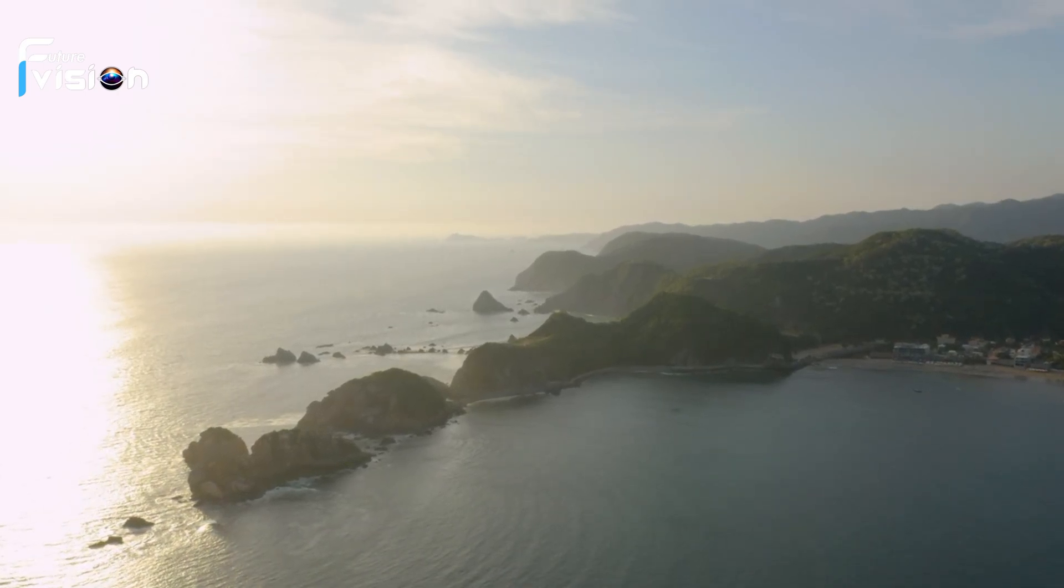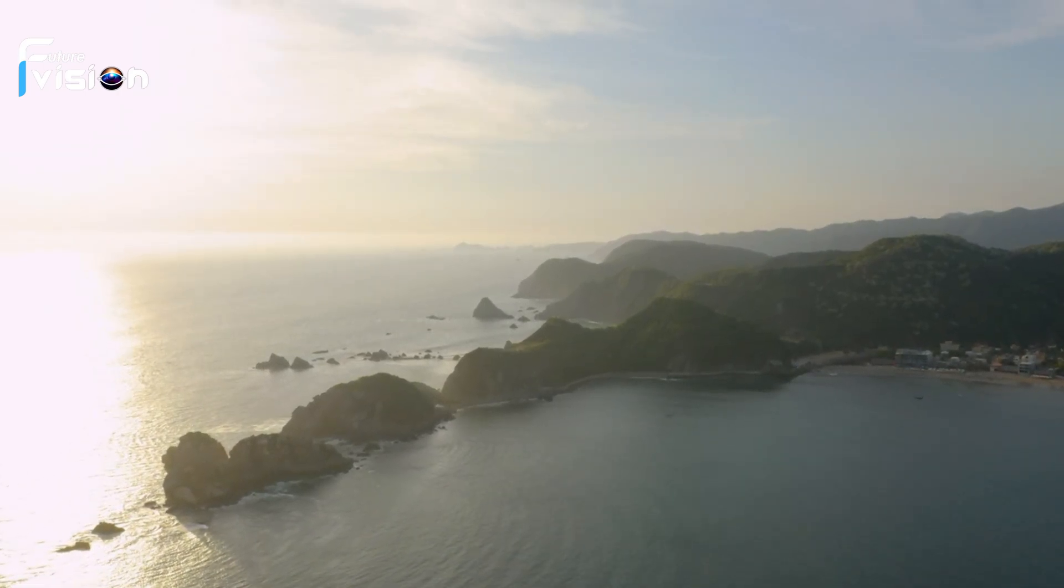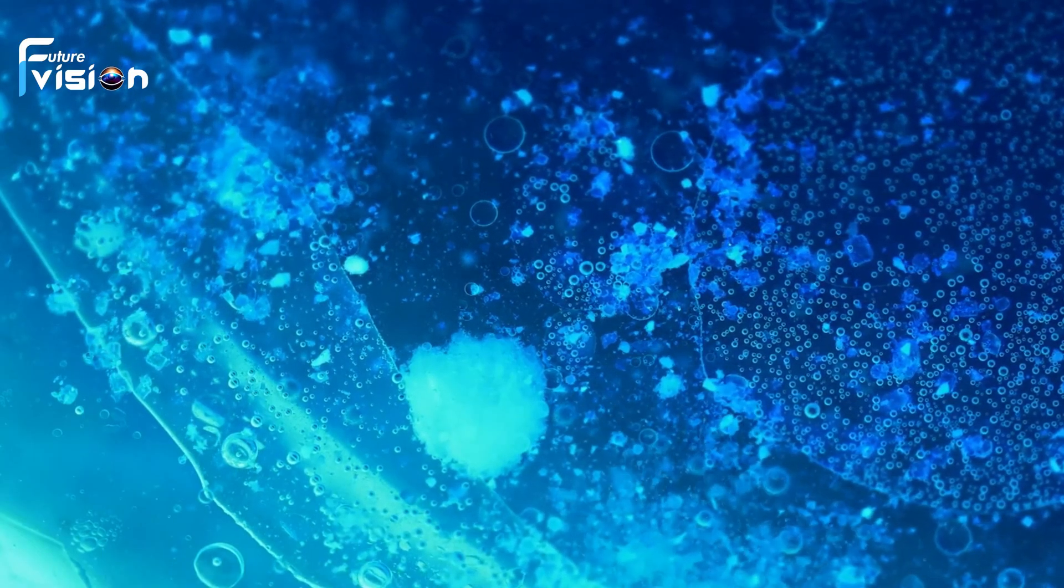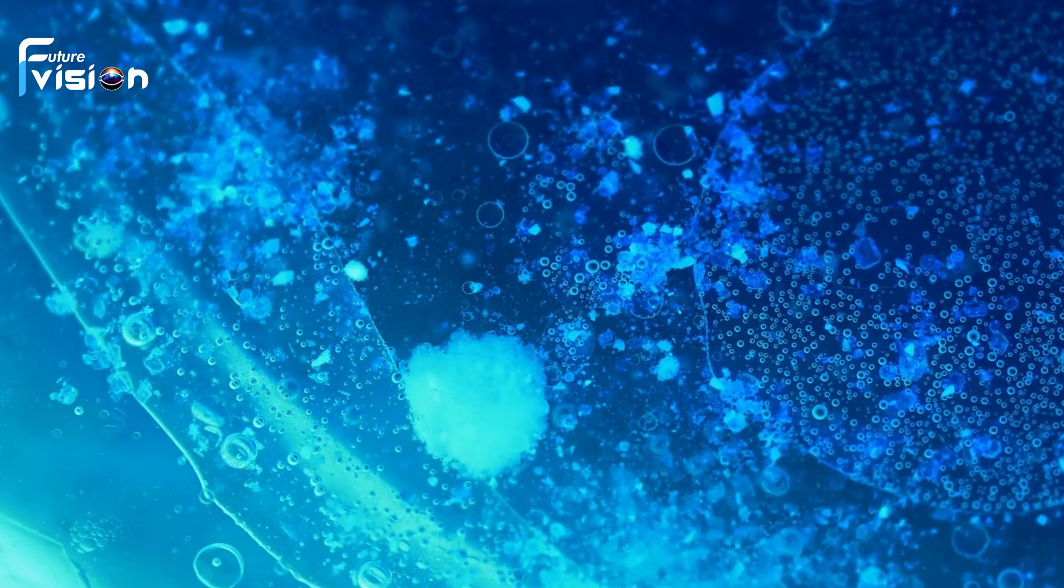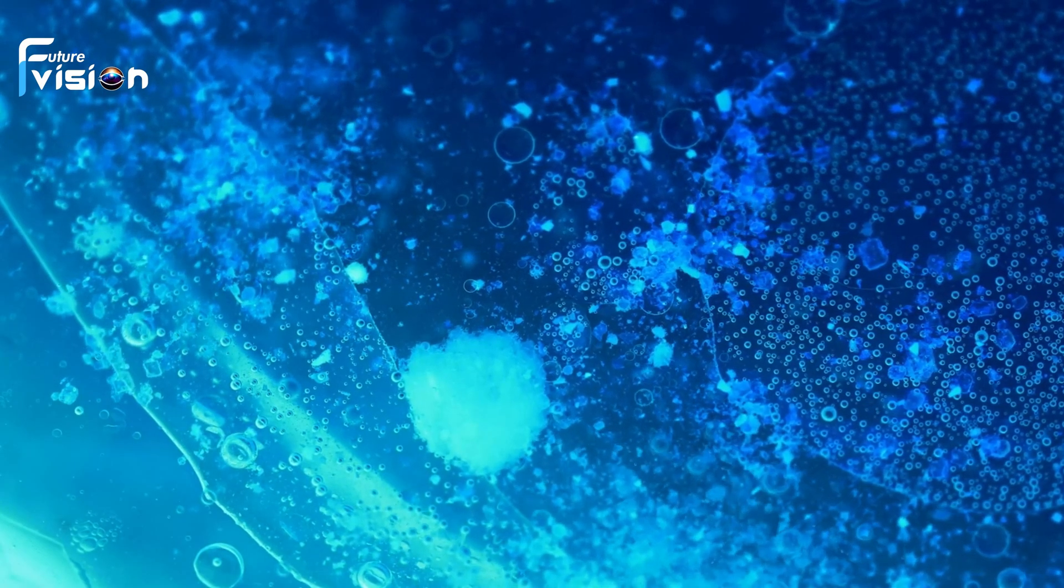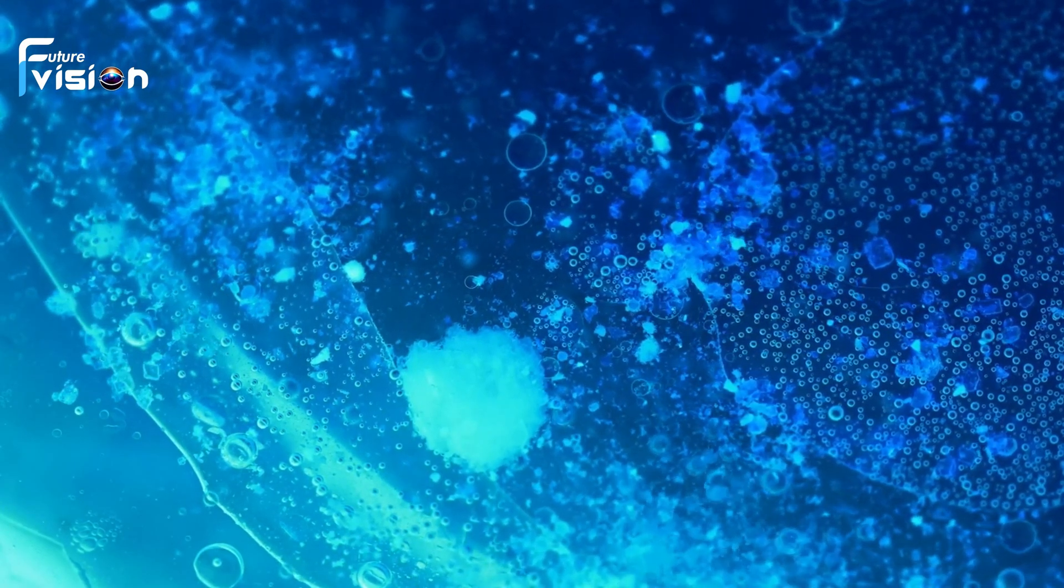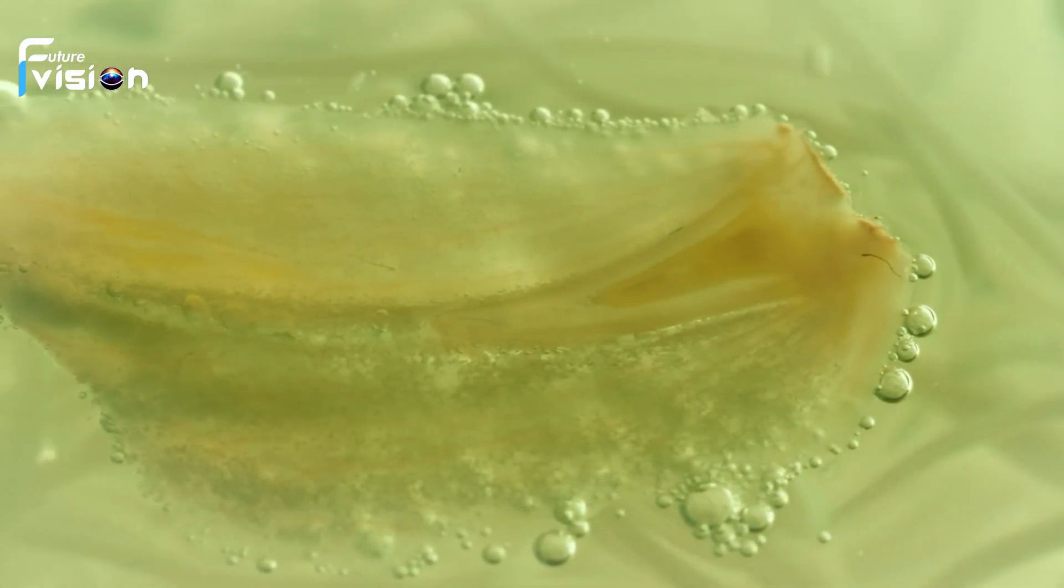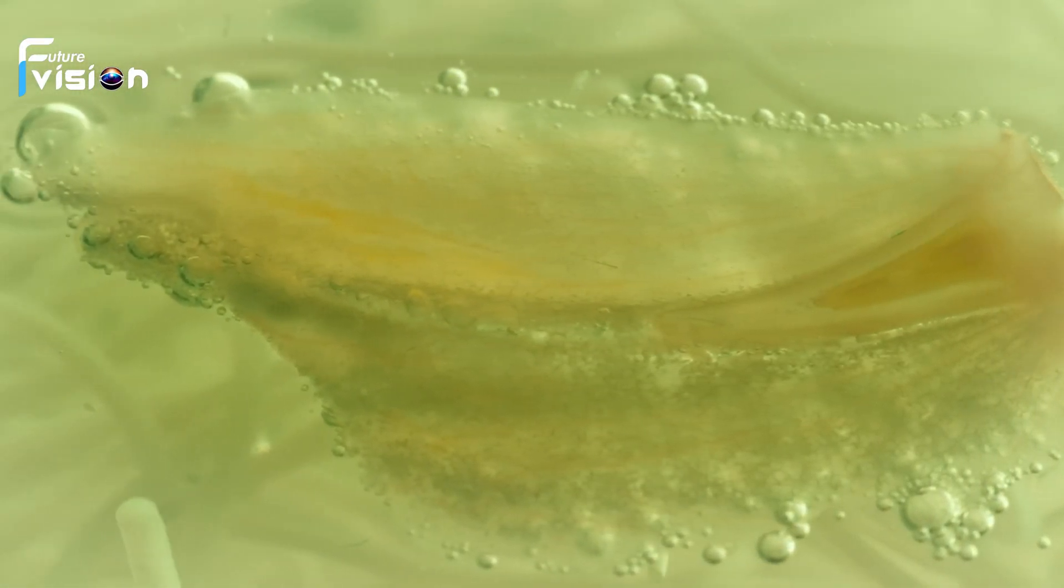Over millions of years, this oxygen built up, paving the way for more complex life forms to evolve. Around 3.5 billion years ago, the first photosynthetic organisms emerged. These ancient cyanobacteria used sunlight to convert carbon dioxide and water into energy, releasing oxygen as a waste product.